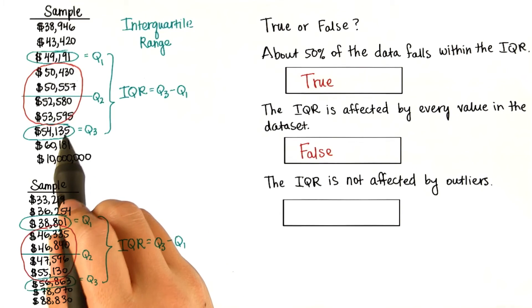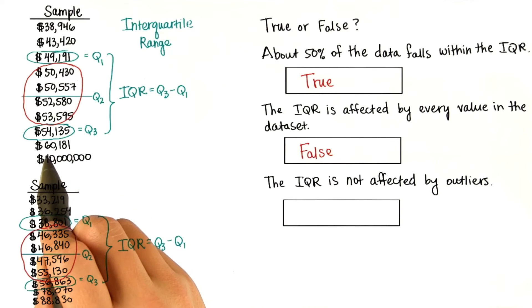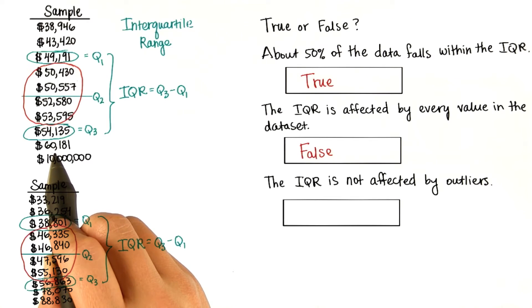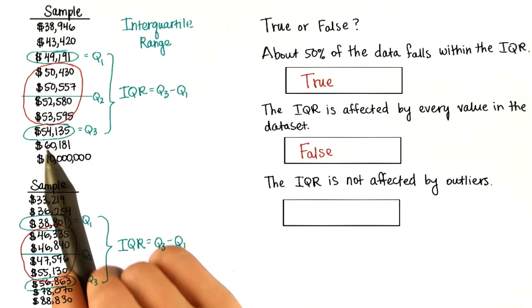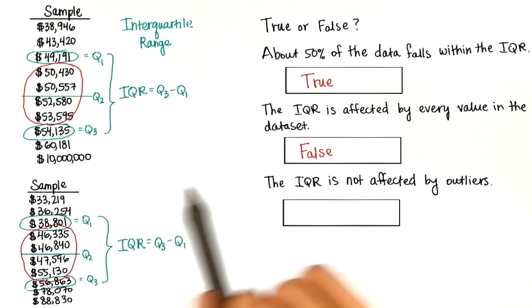If we made 54,135 bigger than 60,181, then this would be the new Q3. So sometimes certain values can influence the IQR, but it's not affected by every value in the data set.